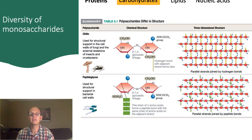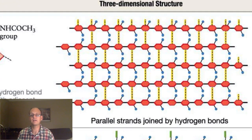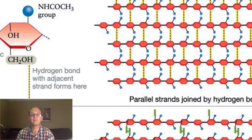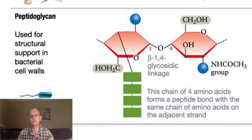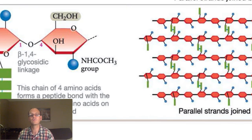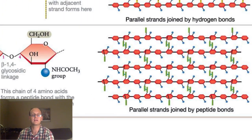Fungi and insects also make use of beta-glycosidic bonds, except their glucose molecules have been modified. As with cellulose, extensive hydrogen bonding exists between the relatively flat, straight polymers. Bacteria have a layer in their cell walls called peptidoglycan, where modified glucose molecules interact to form a very stable, strong lattice. In the case of peptidoglycan, the side chains are actually amino acids, which can form strong peptide bonds with other amino acids on adjacent polysaccharide chains.